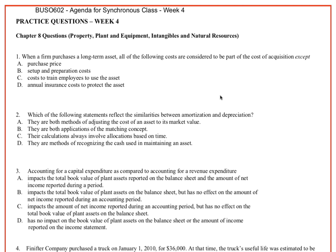When a firm purchases a long-term asset, all of the following costs are considered to be part of the acquisition except — which one is not included? We're going to include the purchase price — that's the obvious one. Setup and preparation costs, yes, that's all part and parcel of it. Costs to train the employees to use the asset — yes, because the asset would not be usable until those costs were incurred. And then annual insurance costs to protect the asset — that's just a regular expense and would go through as part of the expense of the business.